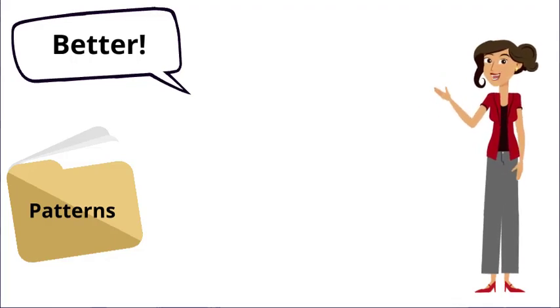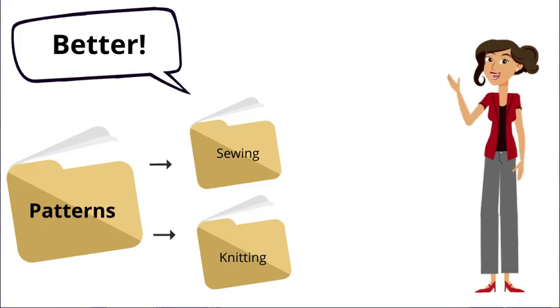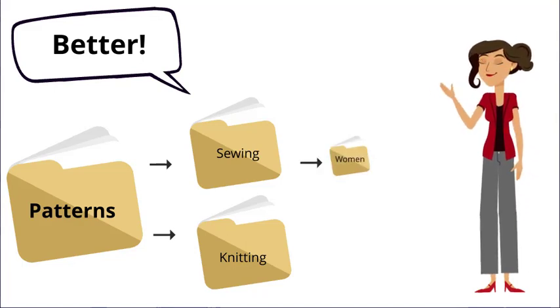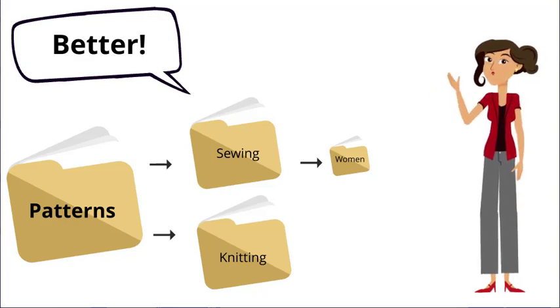It'd be far better to create a separate folder for knitting and for sewing. You could then create subfolders within these if and when it makes sense to do so. For example, the sewing patterns folder could have a subfolder for women, which could potentially have subfolders for different clothing types such as suits, dresses, accessories, etc.